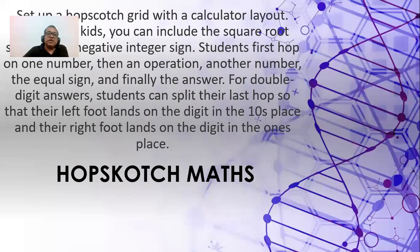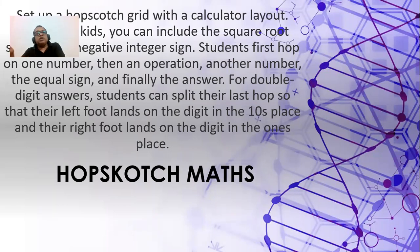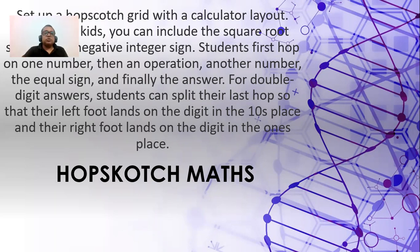Hopscotch math — this is good for smaller kids. Make a grid. They will skip on one number, say number five. Then they have to skip on an operation — five, then jump into 'times', then another number, say three, then jump on 'equals', and then jump on the answer 15. The child has to really think: one number, then the operation, then the second number, then equals, then the final answer. That is called hopscotch math.